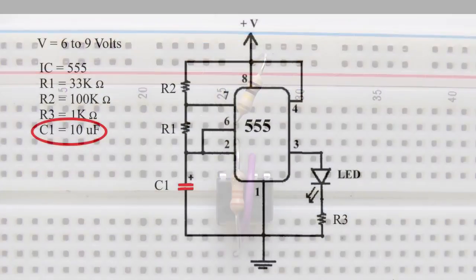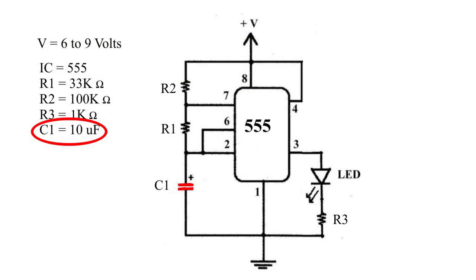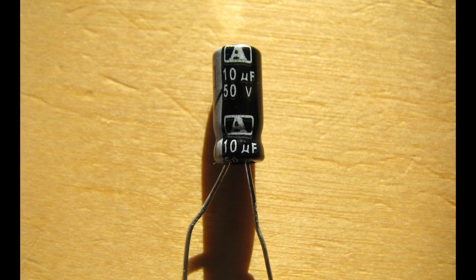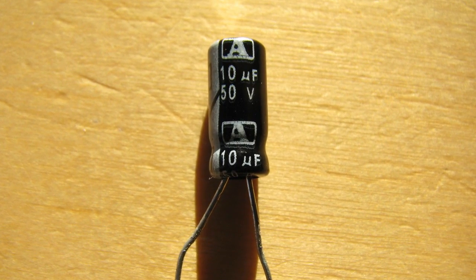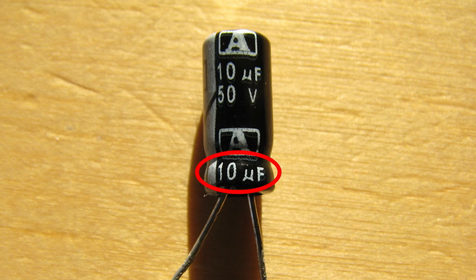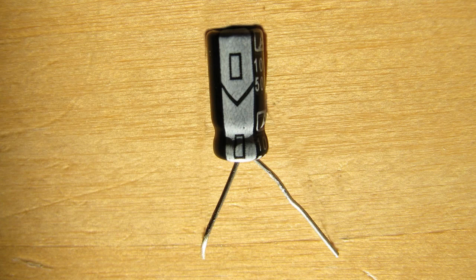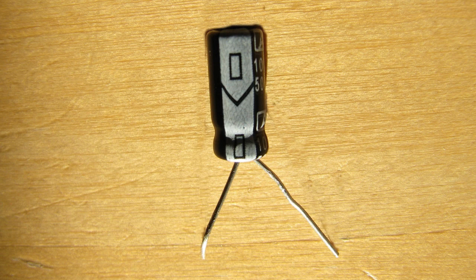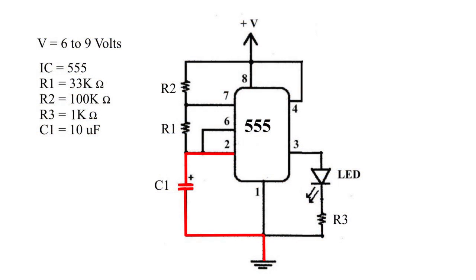The next component we will add is a capacitor. On the diagram, it is C1. Capacitors are like miniature rechargeable batteries. The unit of capacitance is the farad. We need a 10 microfarad capacitor. That value is indicated on the side of the capacitor. The voltage rating is the maximum voltage that can be used to charge this device. Another important fact about this capacitor is that it is polarized. It has positive and negative terminals. The negative lead is indicated by these symbols on the side of the capacitor. According to our circuit diagram, the positive lead of the capacitor connects to pin 2, the other lead to the negative supply line, the row of holes adjacent to the blue line.